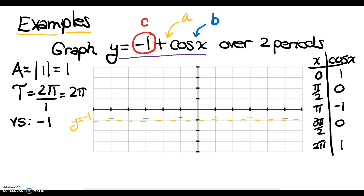Now I label my x-axis. The period is 2π, so I mark off 4 equal intervals, label 2π, divide that in half to get my midpoint, then divide each half into halves to get my quarter and three-quarter marks. Since it says over 2 periods, I also count backwards 4 intervals, labeling negative 2π, negative π, negative 3π/2, and negative π/2.